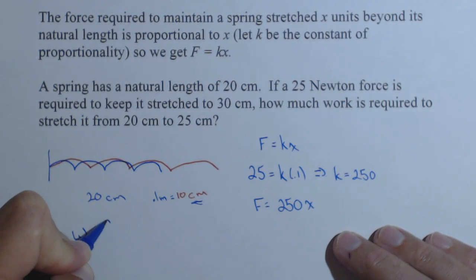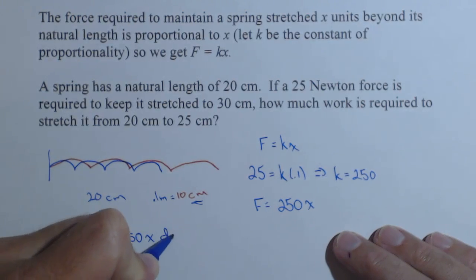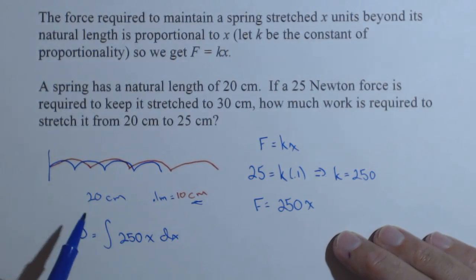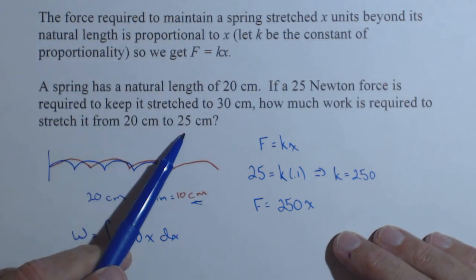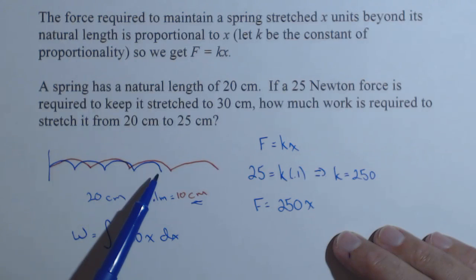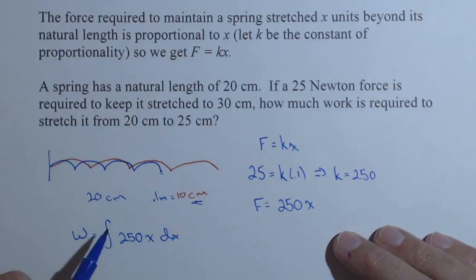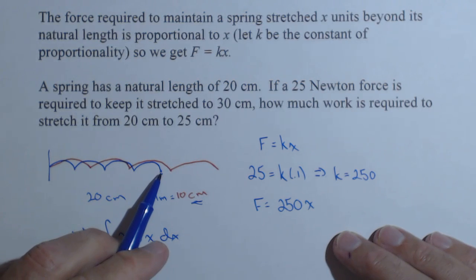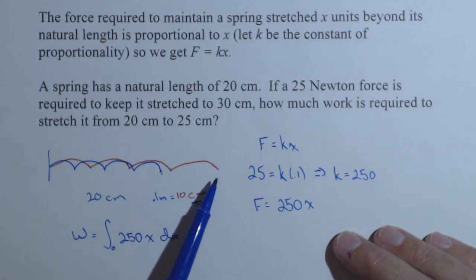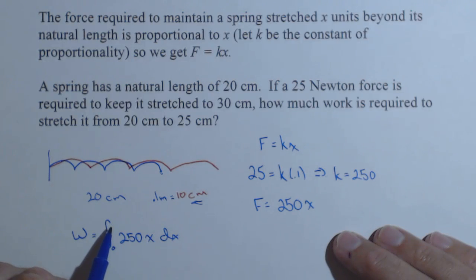So our work is the integral of 250x dx. And now, thinking of our limits, we're stretching it from 20 centimeters to 25 centimeters. 20 is its natural length, so that's just zero. It takes no work to have it at its natural length. And we're moving it five centimeters. Well, we also need to be in meters, so the upper limit's going to be 0.05.